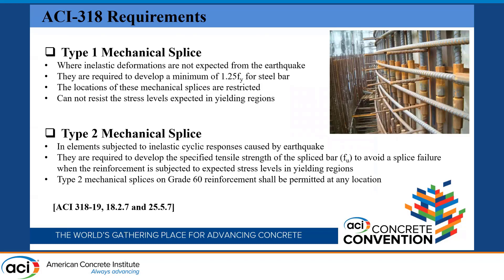Based on ACI 318, there are two types of mechanical splices. The first type can be used where inelastic deformations are not expected from earthquakes, and these couplers need to develop a minimum of 1.25 times the yield strength of the steel bar. The second type can be used in elements subjected to inelastic cyclic responses caused by earthquakes, and they are required to develop the ultimate tensile strength of the steel bar.